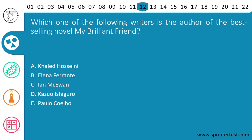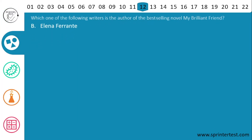Question 12: which one of the following writers is the author of the best-selling novel My Brilliant Friend? The options are: A) Khalid Hosseini, B) Elena Ferrante, C) Ian McEwan, D) Kazuo Ishiguro, E) Paolo Coelho. After five seconds, the correct answer is B, Elena Ferrante.